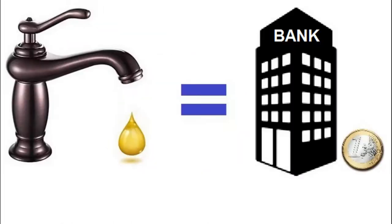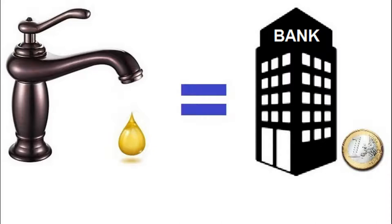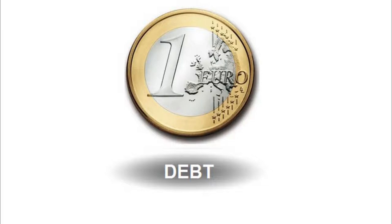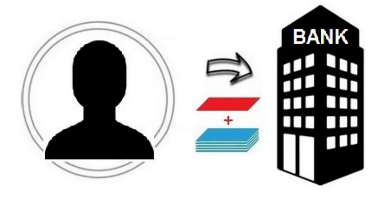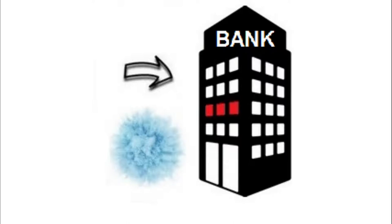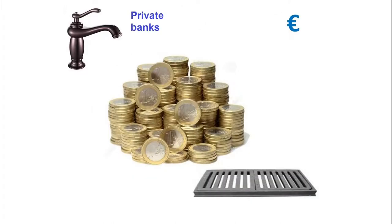Euros in circulation are therefore created by private banks out of thin air, when a person, company, or state negotiates and obtains credit. Money creation is currently a private and fee-based service. The euro and other currencies such as the dollar, the Swiss franc, and the yen are debt-bearing currencies. What happens when you repay your debt? You pay the bank the amount of the credit with interest, and the bank collects the interest — but the principal amount is destroyed.